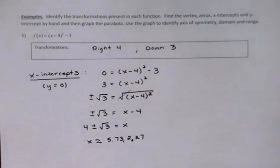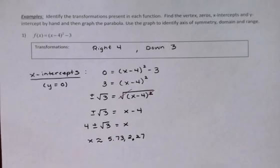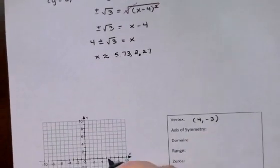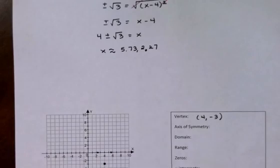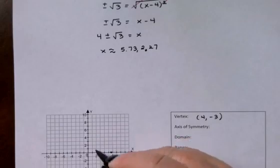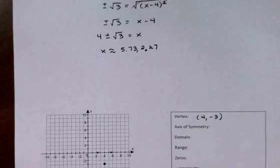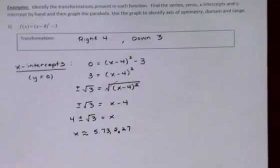So my x-intercepts or my zeros are approximately 5.73 and 2.27. So let's put those on our graph. 5.73 around there and 2.27 around there. That's actually enough. I've got my vertex and two additional points. I could make a pretty good sketch of the graph right now, just drawing in that U shape or that parabola shape. But we were asked to find the y-intercepts as well. So let's get that in before we do our graph.